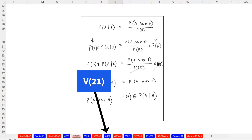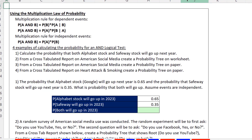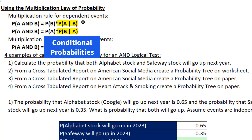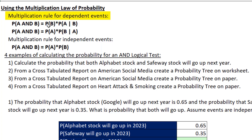Over in sheet V21, here's our Multiplication Rule for Dependent Events. These are conditional probabilities, so the events A and B are related or dependent. We have two options — both calculate the probability of event A and B. We can do probability of B times the probability of A given that B already occurred, or probability of A times the probability of B given that A occurred.